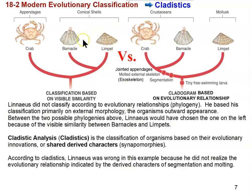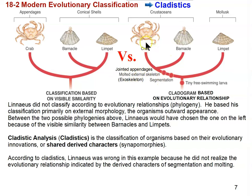Barnacles and limpets have a similar lifestyle too — they're both attached to rocks, they both have to survive crashing waves, and they both live in the intertidal where there's a lot of wave action. They took on this shape in order to survive those crashing waves and not be knocked off rocks. But based on cladistics, crabs and barnacles share all these other characteristics, which strongly suggests that crabs and barnacles are much more closely related to each other than barnacles and limpets are.